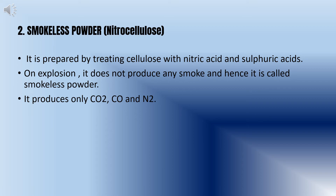Smokeless powder is prepared by treating cellulose with nitric acid and sulfuric acid. The nitrocellulose soap form is dissolved in a mixture of ether and alcohol and then the solvent is evaporated when a jelly-like solid is left behind. On explosion it does not produce any smoke and hence is called smokeless powder. It produces only CO2, CO, H2O and N2.